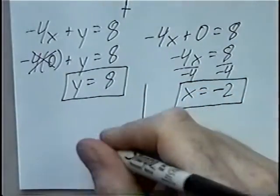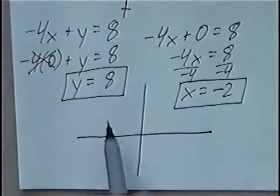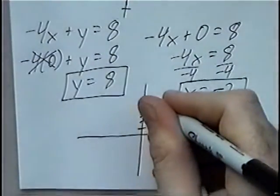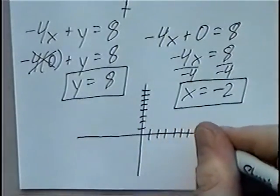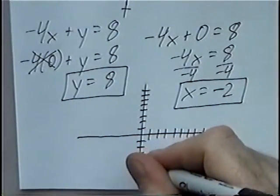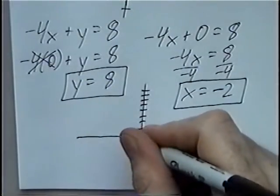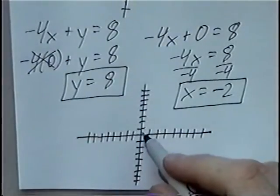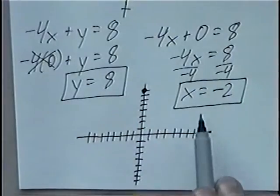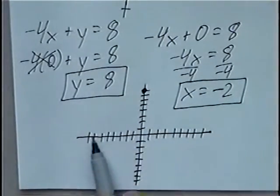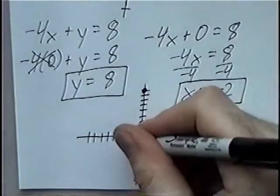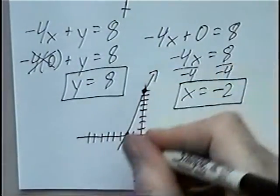Graphing from here, we can draw the XY axis. The biggest number we have is 8, so we can go 8 in each direction. Graphing the intercepts: Y equals 8, so the line will cross the Y axis at positive 8. The X intercept is at negative 2, so we put a point at negative 2 on the X axis. Using these two points, we can connect them, and that will be the graph for the equation.